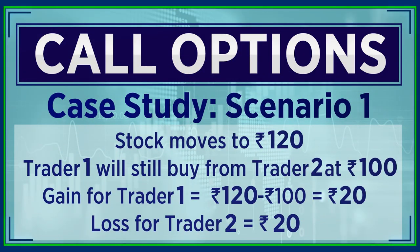Scenario one: the stock goes to 120. In that case, for an option buyer, the market price is 120 but he has an option to buy it at 100 rupees. So obviously his gain is 20 rupees — 120 minus 100. And the same is the loss for an option seller: 20 rupees.